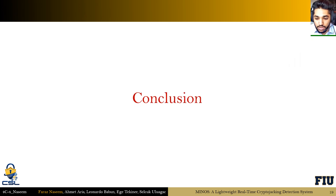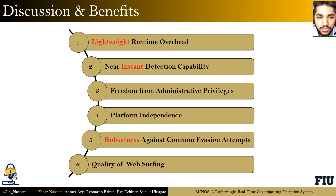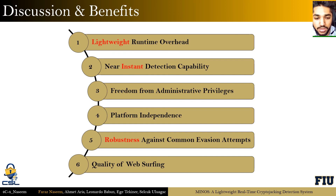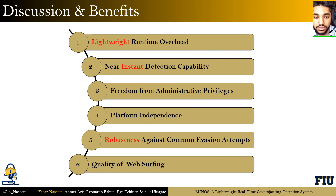In conclusion, Minos has numerous benefits. It is lightweight with near-instant detection capability, accurately detecting every cryptojacking malware sample within 25.9 milliseconds. It is free from admin privileges — it does not need administrative privileges to collect dynamic features such as memory usage, heap execution times, or RAM usage. It is platform-independent, using no OS-specific tools and able to run on any operating system. It is robust against common evasion attempts, and the quality of the web browsing experience is minimally affected, as users are informed within a fraction of a second with substantially low overhead.